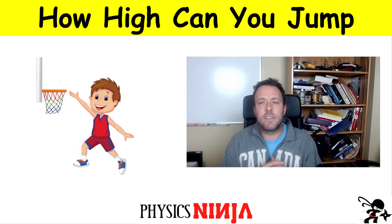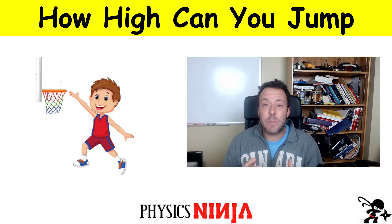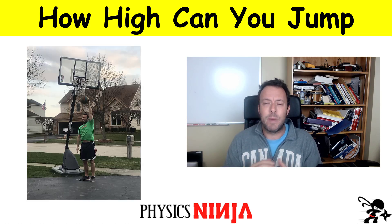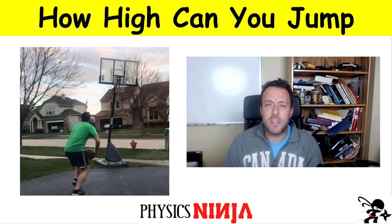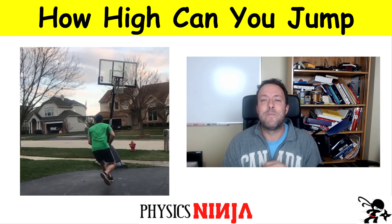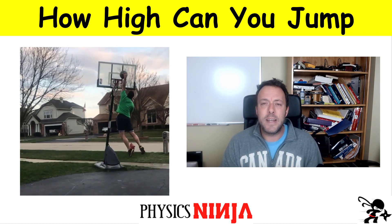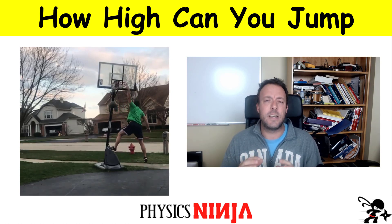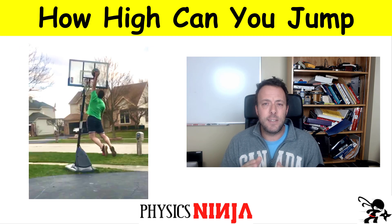Hi everybody, Physics Ninja here today. What I want to do is look at jumping. I was having a conversation with my son earlier this week about playing basketball and how high you can jump. That's something we call a vertical leap, and a little known factoid — I have a pretty decent vertical leap for a 44-year-old man. Here's the empirical data: I have a vertical leap of approximately 60 centimeters based on this video data. That's a little bit less than two feet.